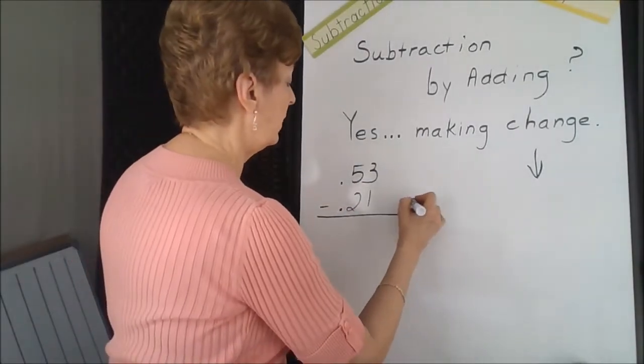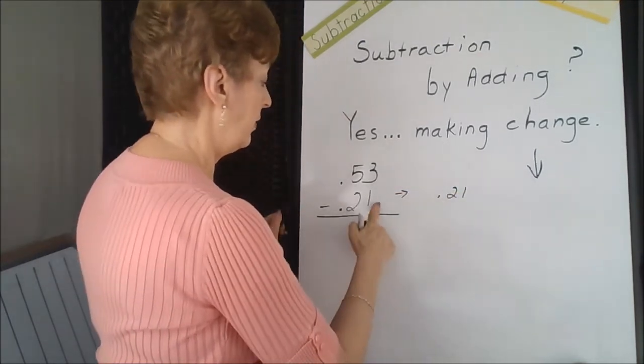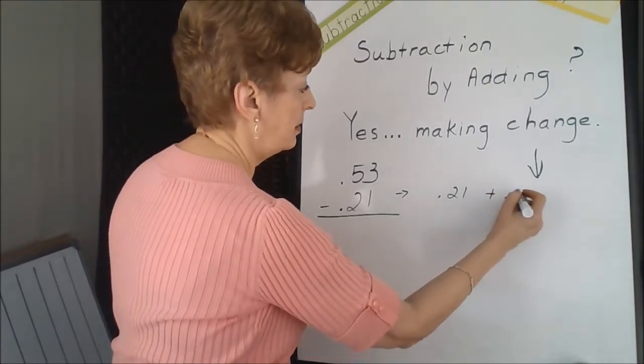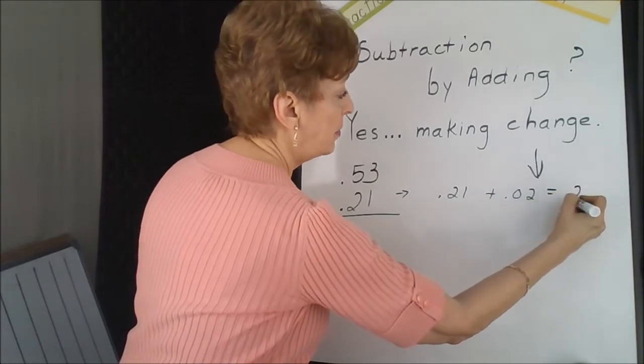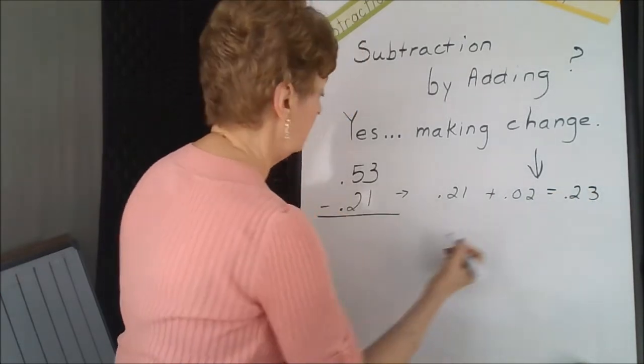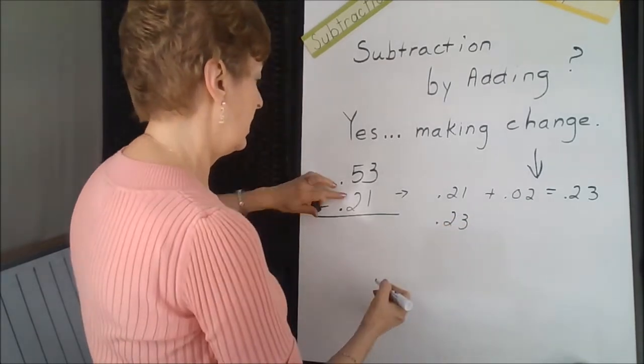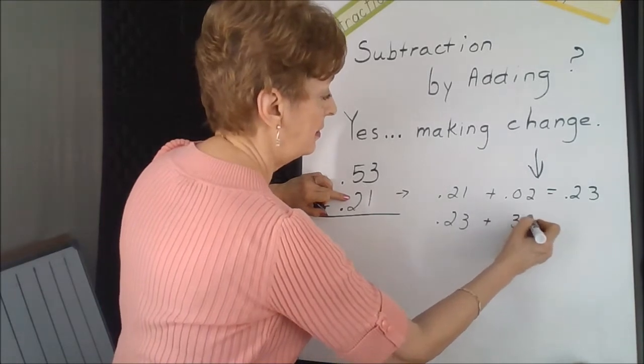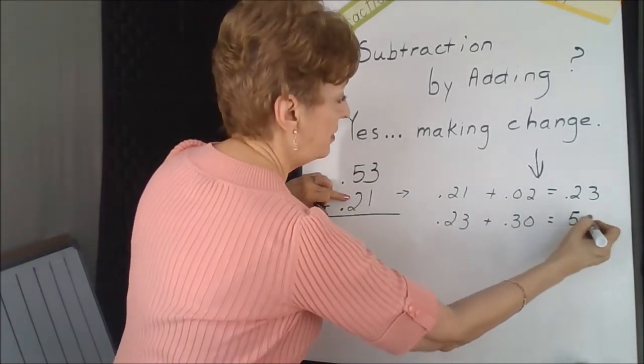Let's start with our 21, and if we add two cents to this, two pennies will get us to 23 cents. Pull our 23 over. If we add three dimes to this, we're going to get 53 cents.